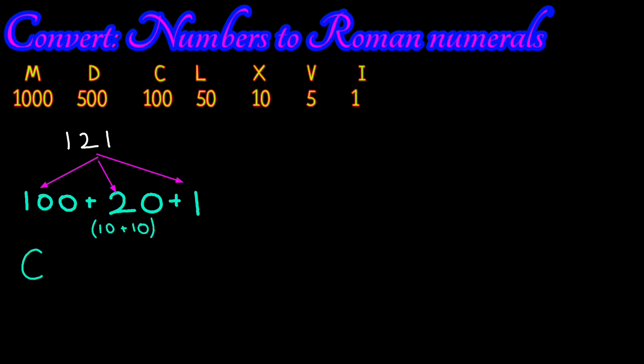20 is XX. For 1 we write I. So for 121 we have CXXI.